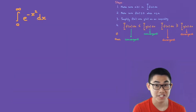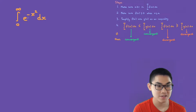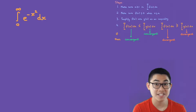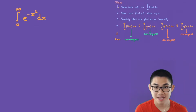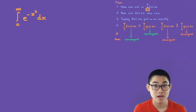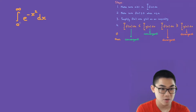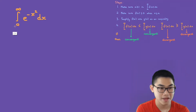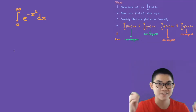Our first example is the integral from zero to infinity of e to the power of negative x squared dx, and we want to know if this improper integral is convergent or divergent. Step one says we have to make sure that a must be greater or equal to one. We see that the lower bound is not greater or equal to one, so what do we do in this case? Well, all we have to do is split this integral up.